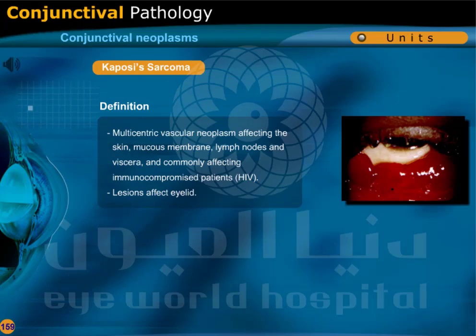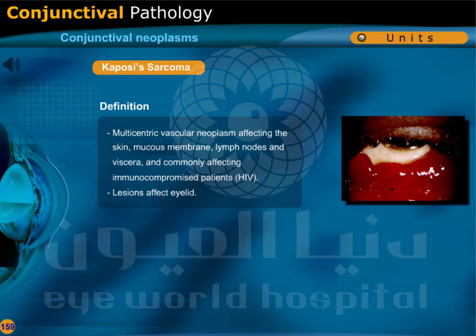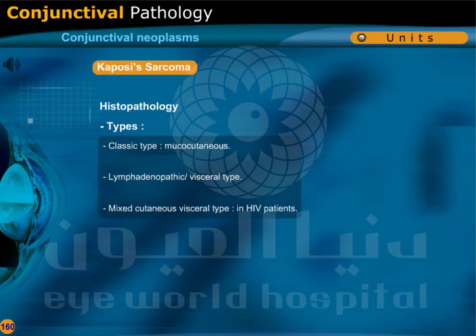Kaposi's sarcoma is a multicentric vascular neoplasm affecting the skin, mucous membranes, lymph nodes, and viscera, commonly affecting immunocompromised patients such as HIV-positive patients. Lesions affect the eyelid. Types include classic type, mucocutaneous type, lymphadenopathic visceral type, and mixed cutaneous visceral type in HIV-positive patients.